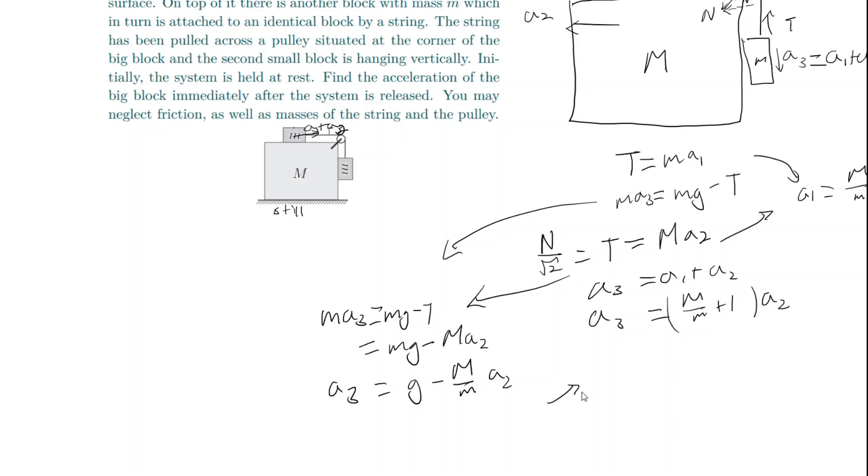So now we plug this into here. We have g minus M over little m a sub 2 equals M over m plus, well let's put it in one fraction, times a sub 2. So g equals 2M over m plus M over m a sub 2.